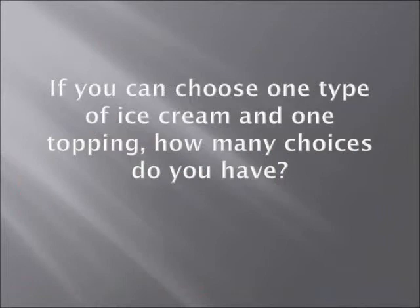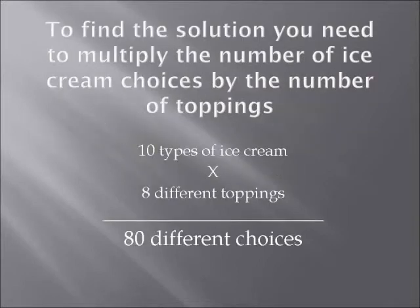The main question is: if you could choose one type of ice cream and one topping, how many choices do you have? To find the solution, you need to multiply the number of ice cream choices by the number of toppings. So if we have ten types of ice cream and eight different types of toppings, there would be a total of 80 different choices.